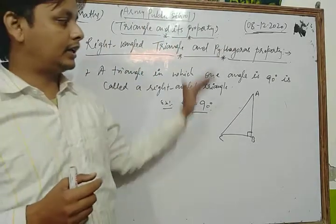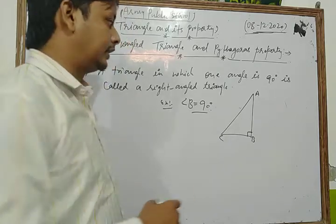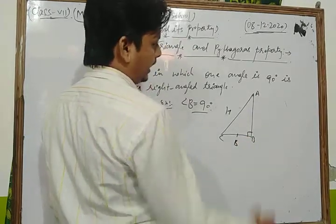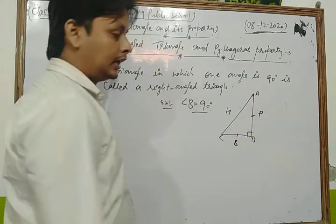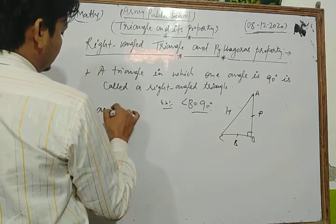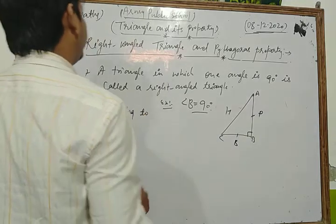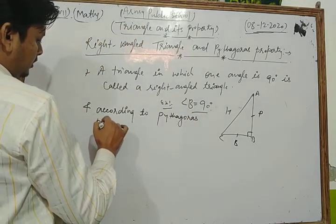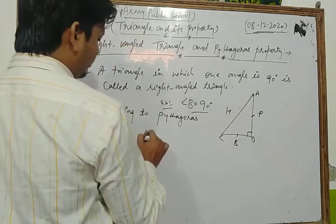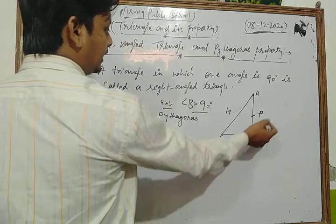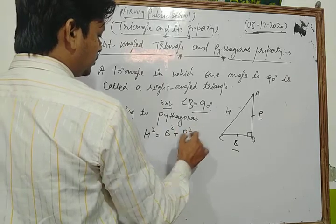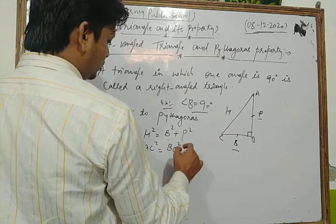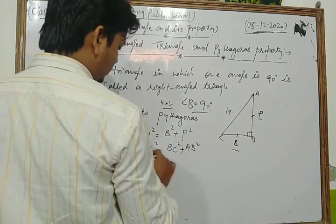In any right-angled triangle, AC is known as the hypotenuse, BC is known as the base, and AB is known as the perpendicular. According to the Pythagoras property, the square of the hypotenuse is equal to the sum of the squares of the base and perpendicular — that is, AC² equals BC² plus AB².